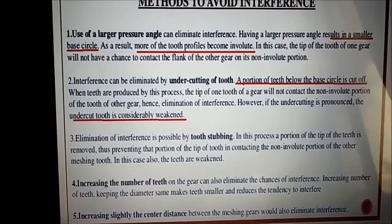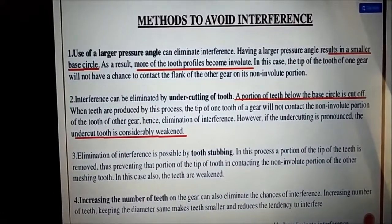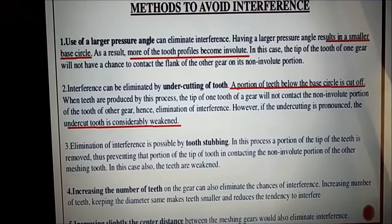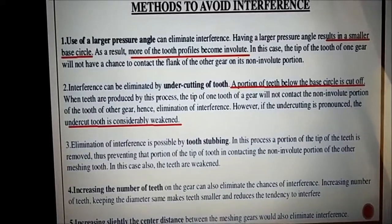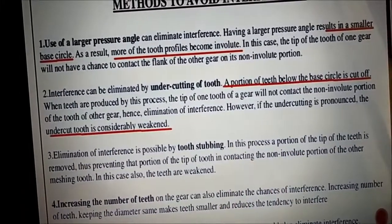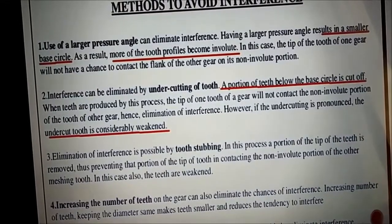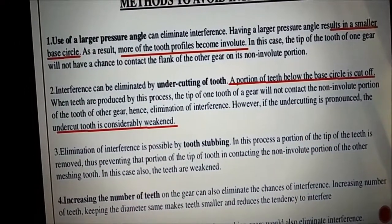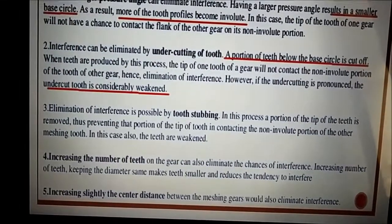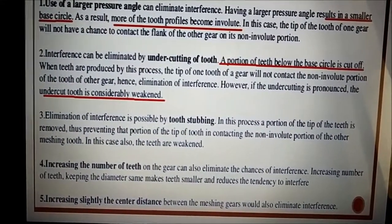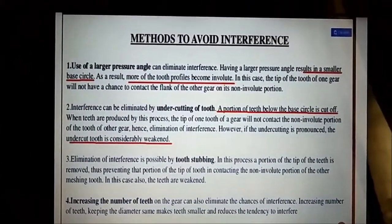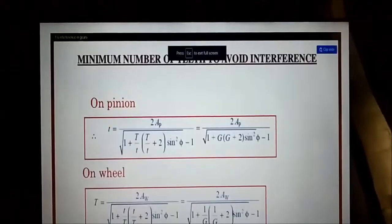So, we have discussed two methods to avoid interference: first, increase the pressure angle; second, design the tooth profile for a minimum number of teeth. Another method called undercutting is also used to avoid interference, but in that case the gear becomes weak at its base, so undercutting is also a negative phenomenon. Next is tooth stubbing, where a portion of the tooth is removed so that the tip does not come in contact with the non-involute curve. Finally, changing the center distance slightly can also avoid interference in involute profiles.